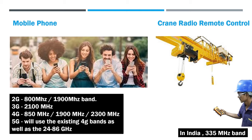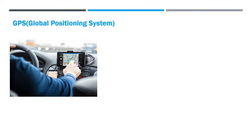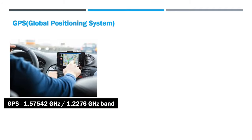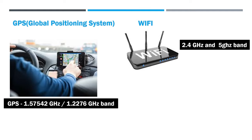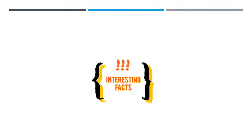In India, 335 MHz band is used for the radio remote control of cranes. When you are travelling in your car, the GPS receives data at 1.57 GHz and 1.22 GHz frequencies. Next, we have Wi-Fi which uses the 2.4 GHz and 5 GHz band. Bluetooth, which again uses the 2.4 GHz band.